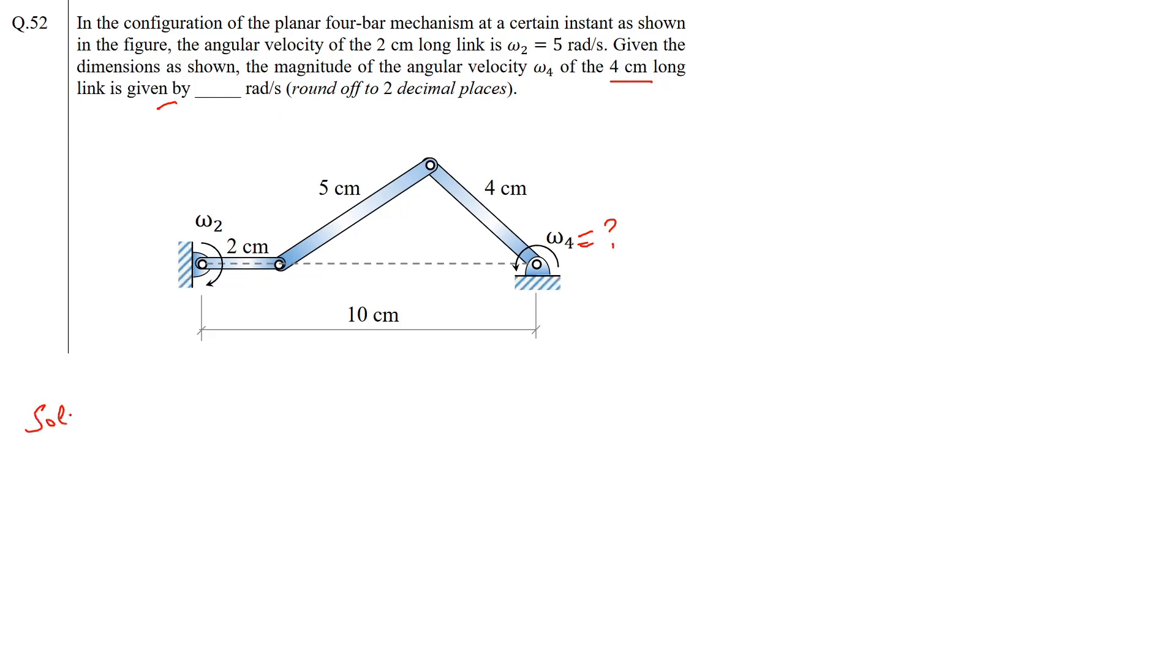If we recall the concept behind this question, it comes under the angular velocity theorem which states that the ratio of the angular velocity of any two links moving in a restricted system is inversely proportional to the ratio of their distances from their common instantaneous center from their center of rotation.